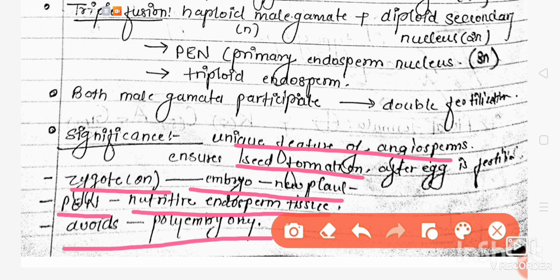The last significance is that it avoids polyembryony. So in this video we discussed about double fertilization. Hope this video was helpful to you. Please hit the like button and subscribe to my channel for more new videos. Thank you.